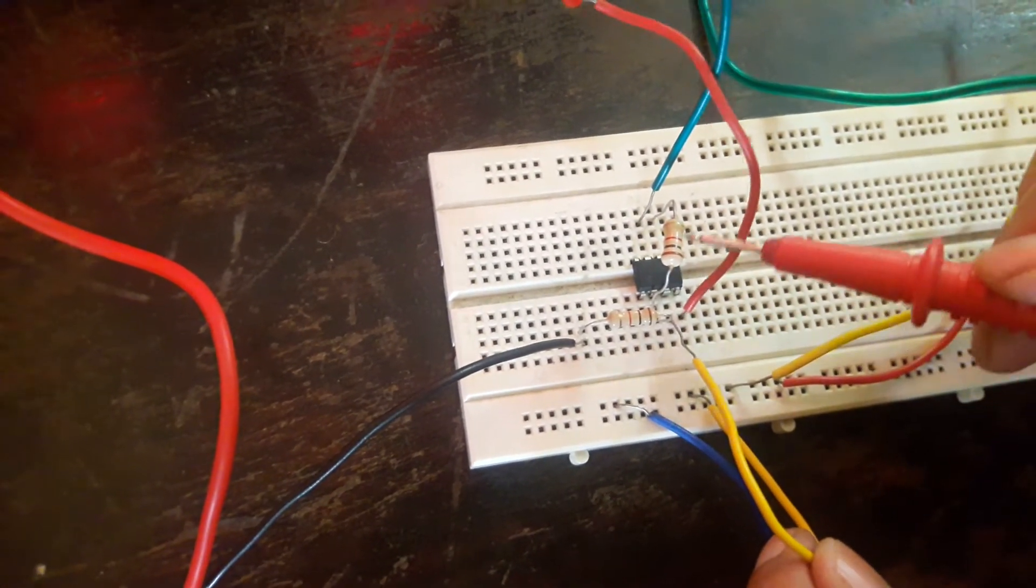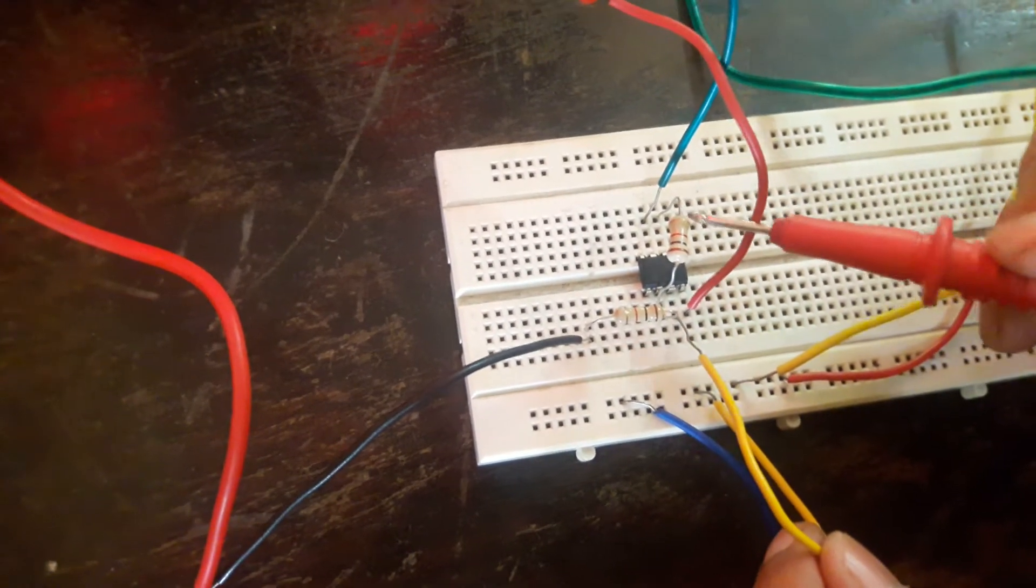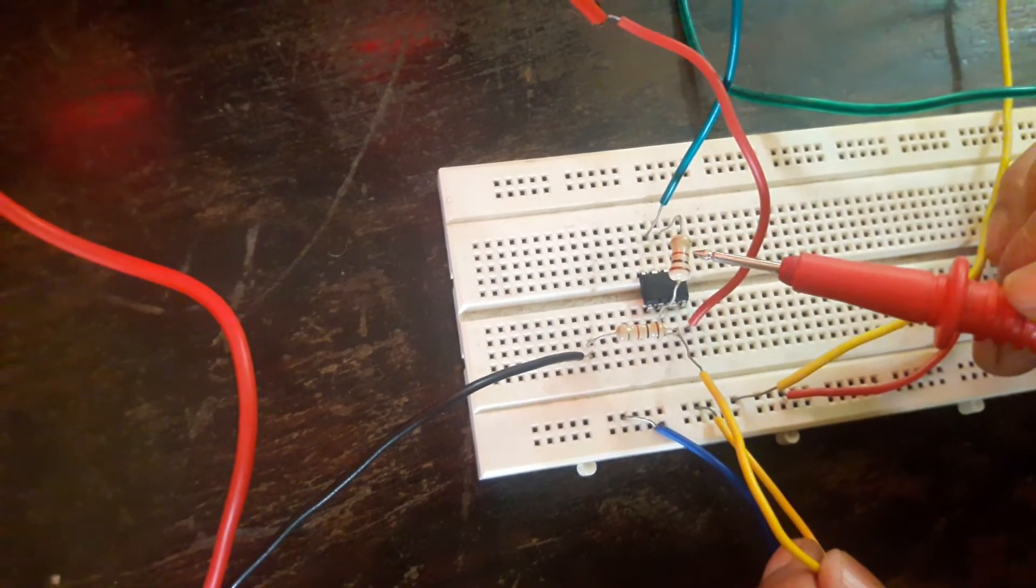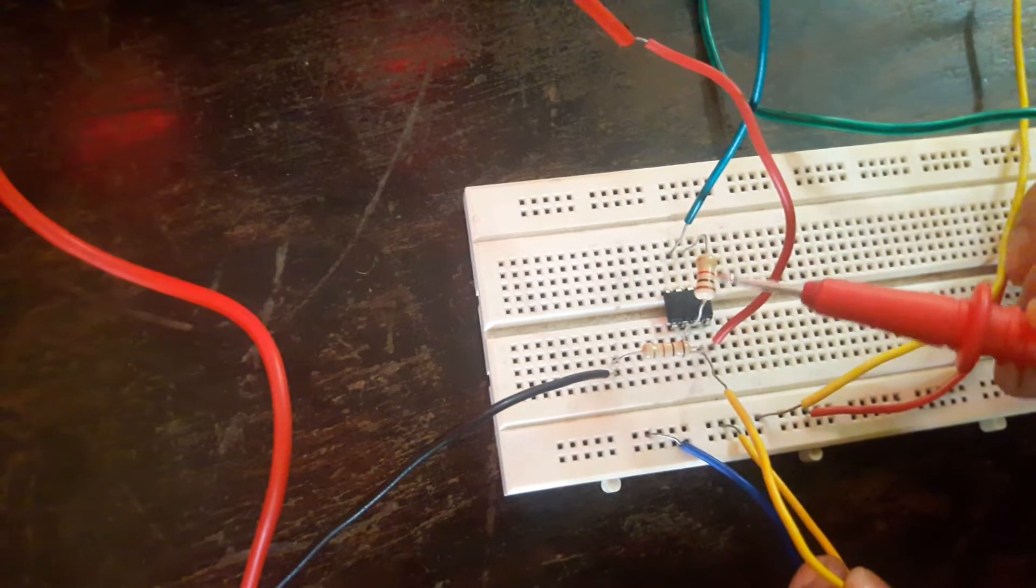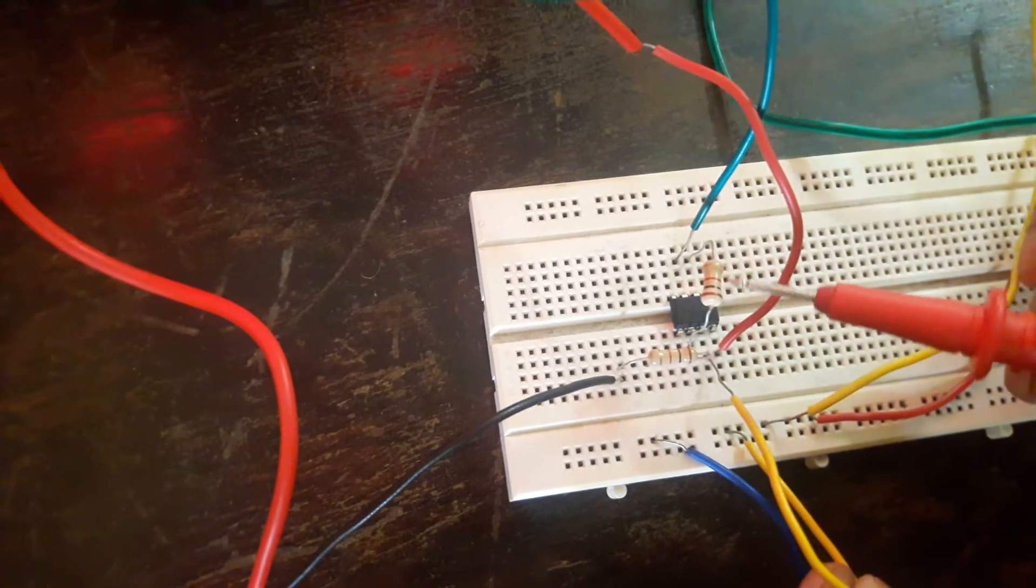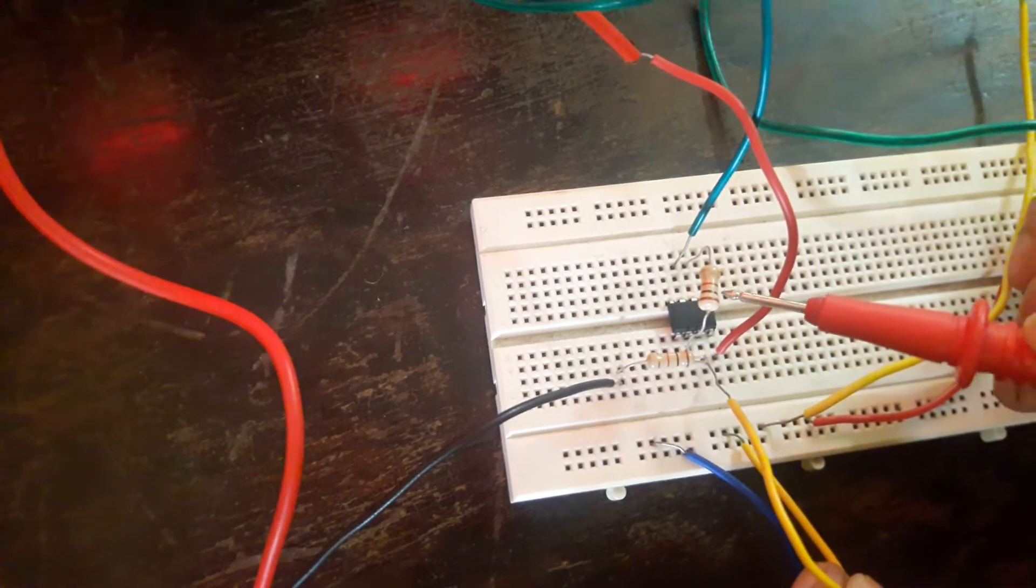From the same pin 2, it is given to pin 6. This resistance is also known as feedback resistance. The value of this is also, we have taken it as 1 kilo ohm.